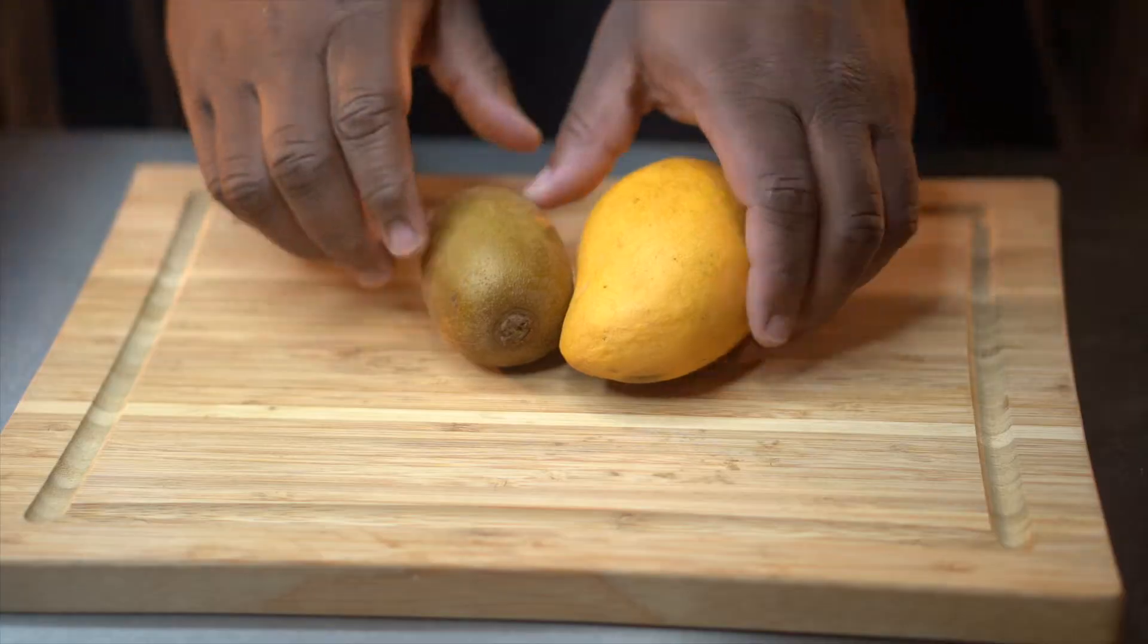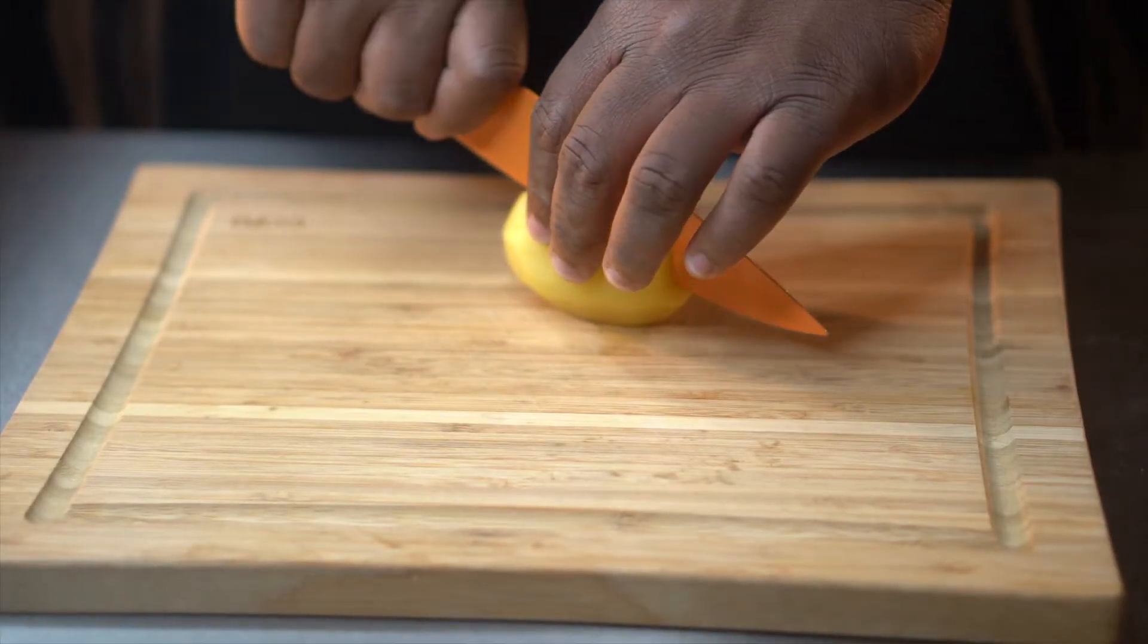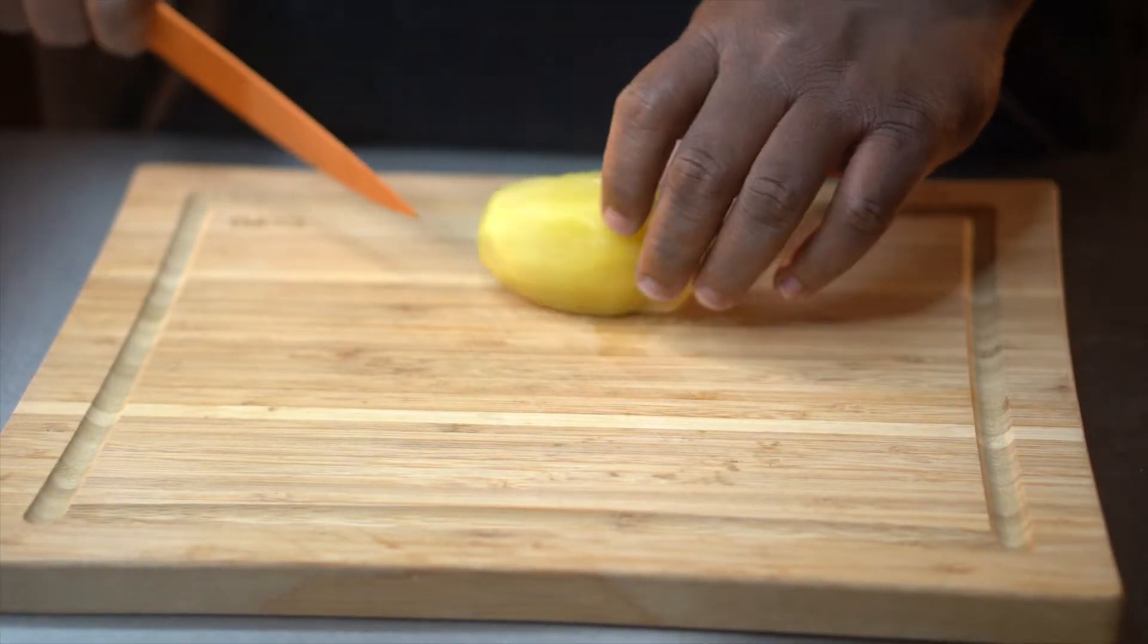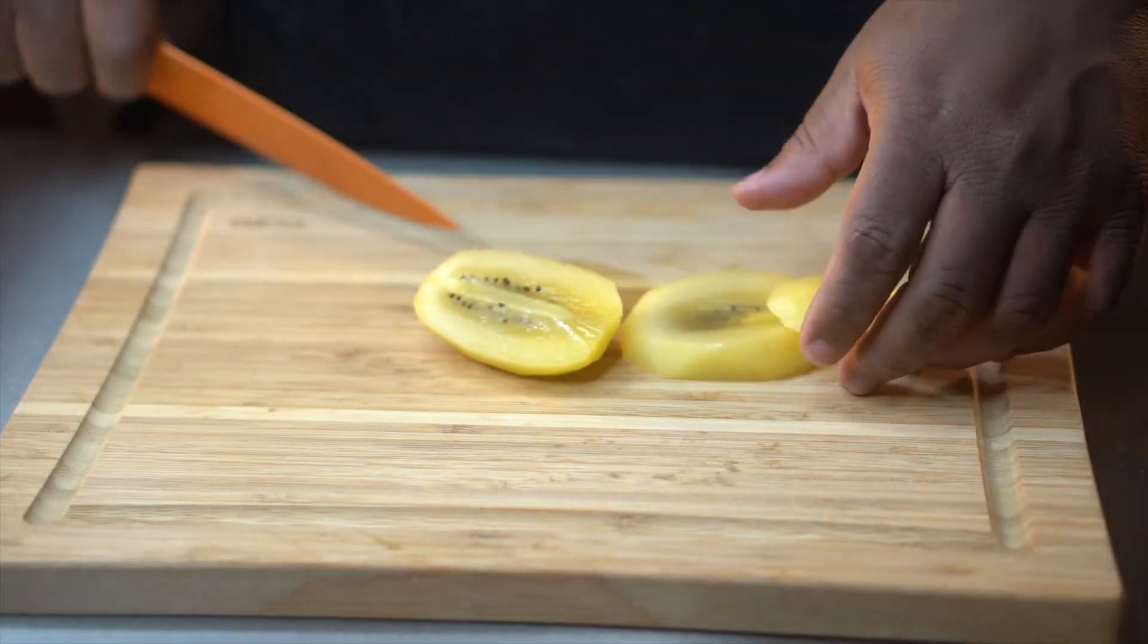Now today we got the most amazing peach lemonade sangria inspired, featuring golden kiwi and mango. So the first thing you want to do is get your golden kiwi and mango cut up, and I'm just cutting these into dices.